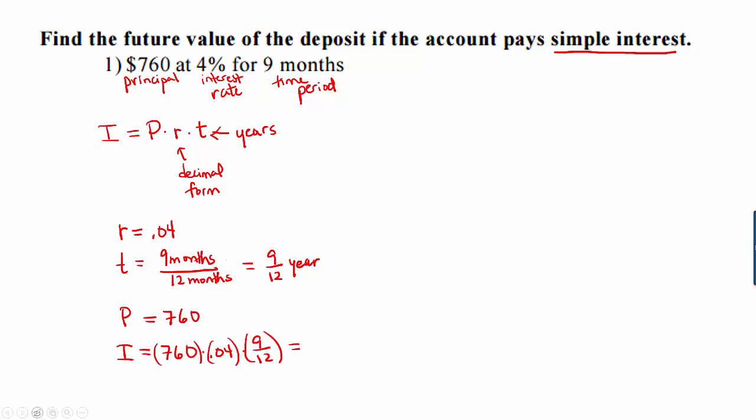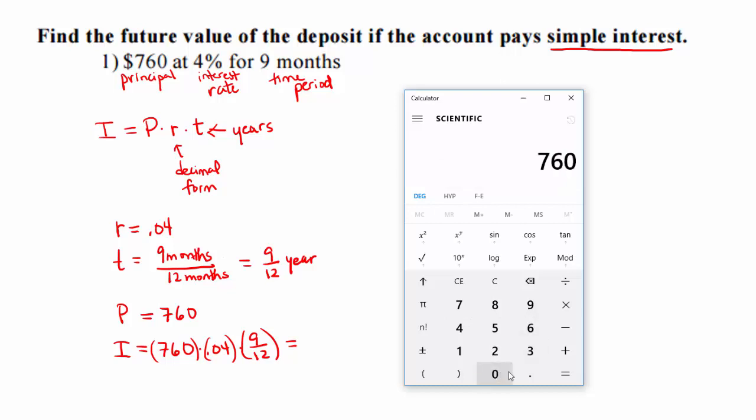I'm going to pull up my calculator. We have 760 times 0.04 times, in parentheses, 9 divided by 12, which is 0.75. That equals 22.8.